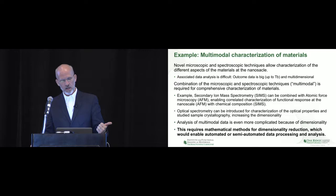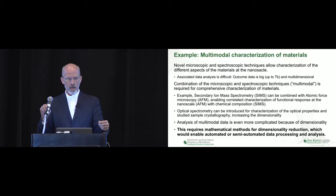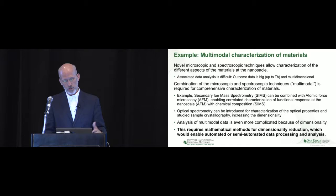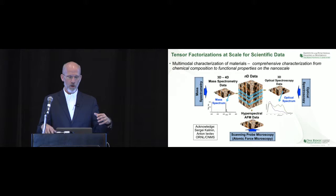For example, secondary ion mass spectroscopy can be combined with atomic force microscopy, enabling a correlated characterization of the functional response at the nanoscale, including composition information. Optical spectroscopy can be added for characterization of optical properties, increasing dimensionality. Analysis of multimodal data is even more complicated because of this dimensionality, and it requires new infrastructure as well as new mathematical methods.